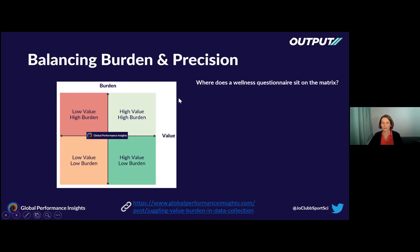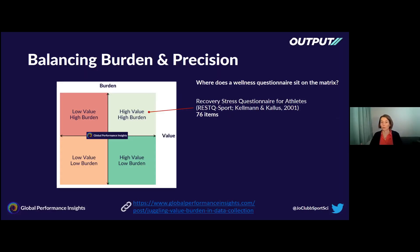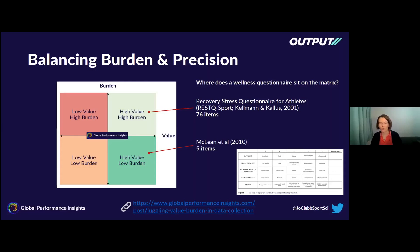The value and the burden that a particular data collection process has is not innate — it's not fixed. It depends on how you implement it. As an example, considering a wellness questionnaire: one option available is the RESCUE Sport Wellness Questionnaire, which has been used in the literature and has 76 items for the athlete to answer. Compare that with a five-item questionnaire. Clearly we've reduced the burden on the athlete, although we have to be careful not to compromise on precision too much in order to improve the burden.